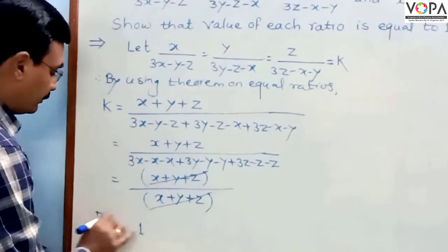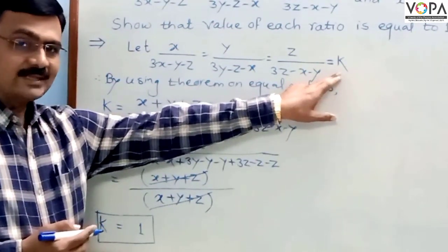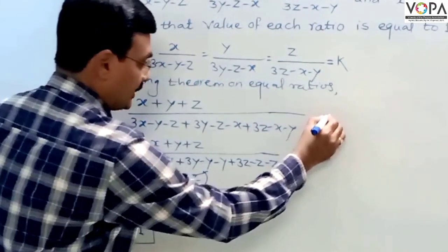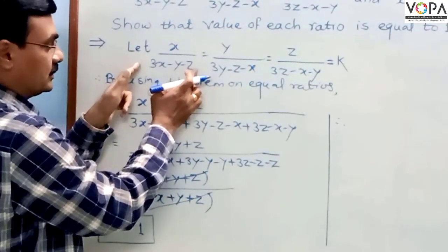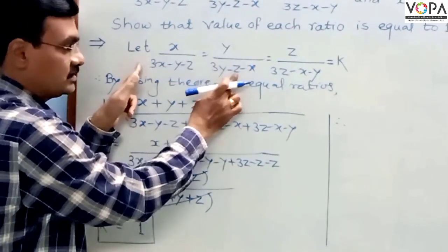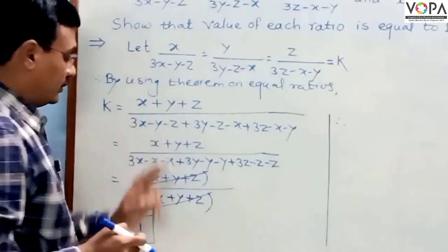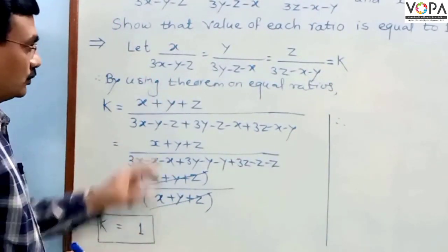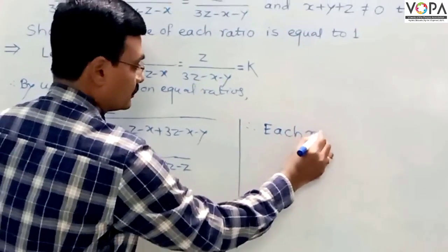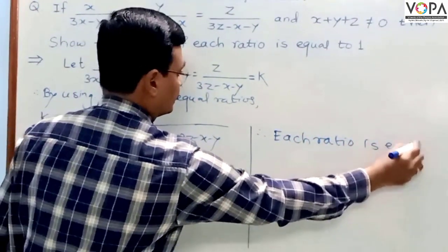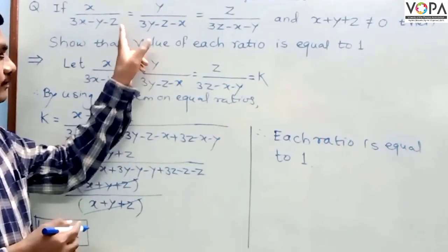Therefore, the value of k is 1. But k is nothing but the equal ratio we assumed. Therefore, we can say that each of the ratios equals 1. By this way, we can use the theorem of equal ratios for the given examples.